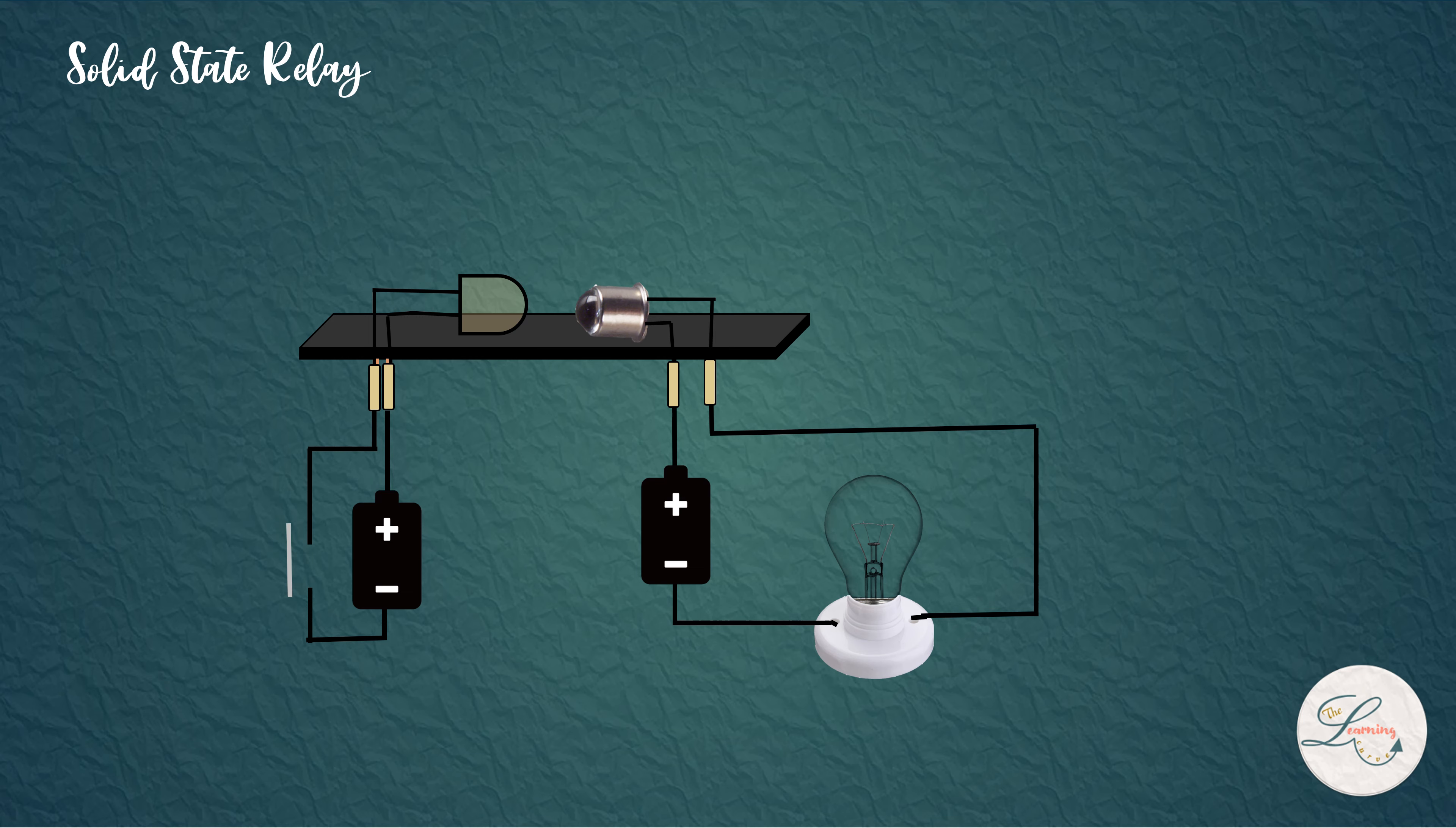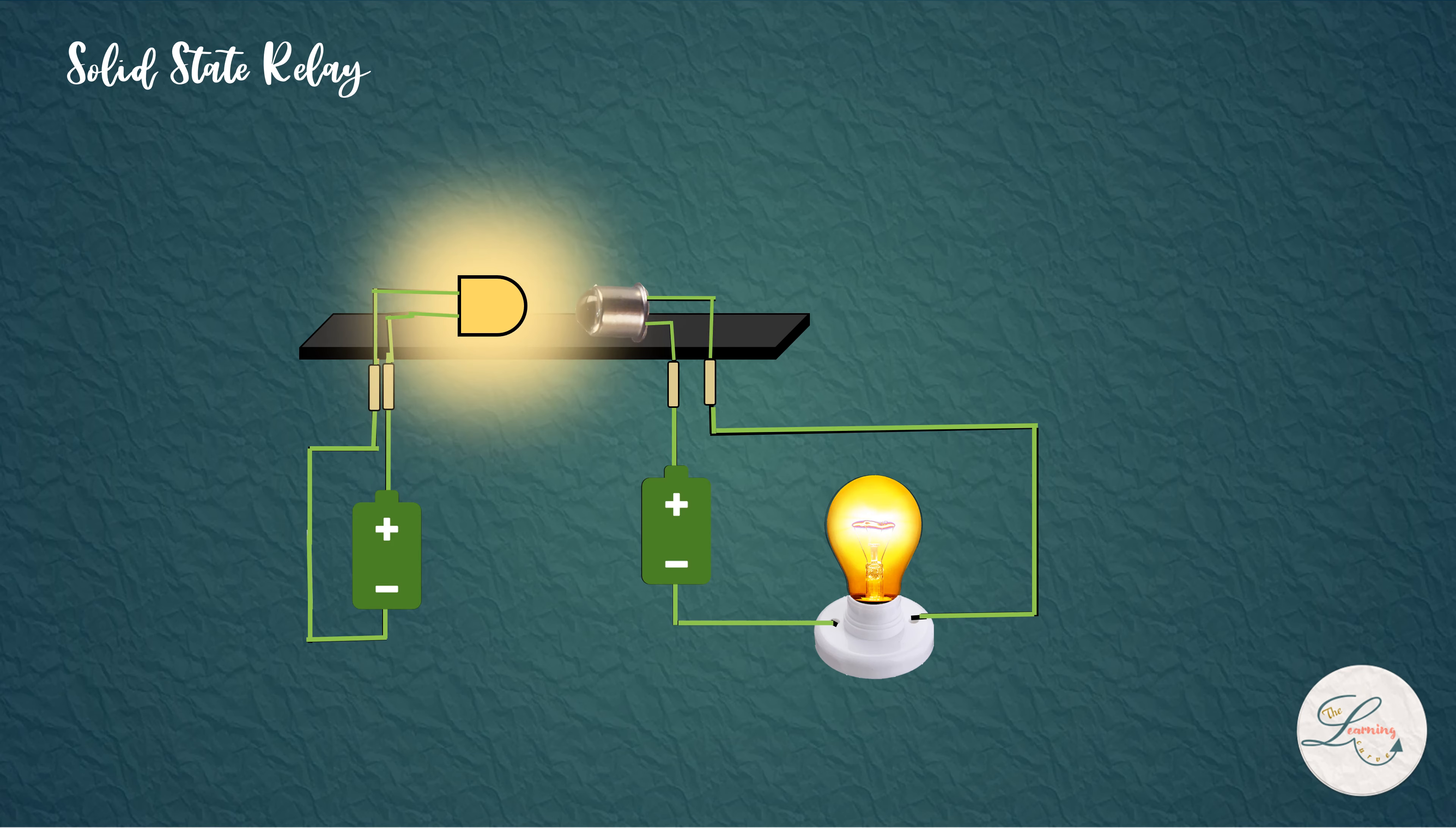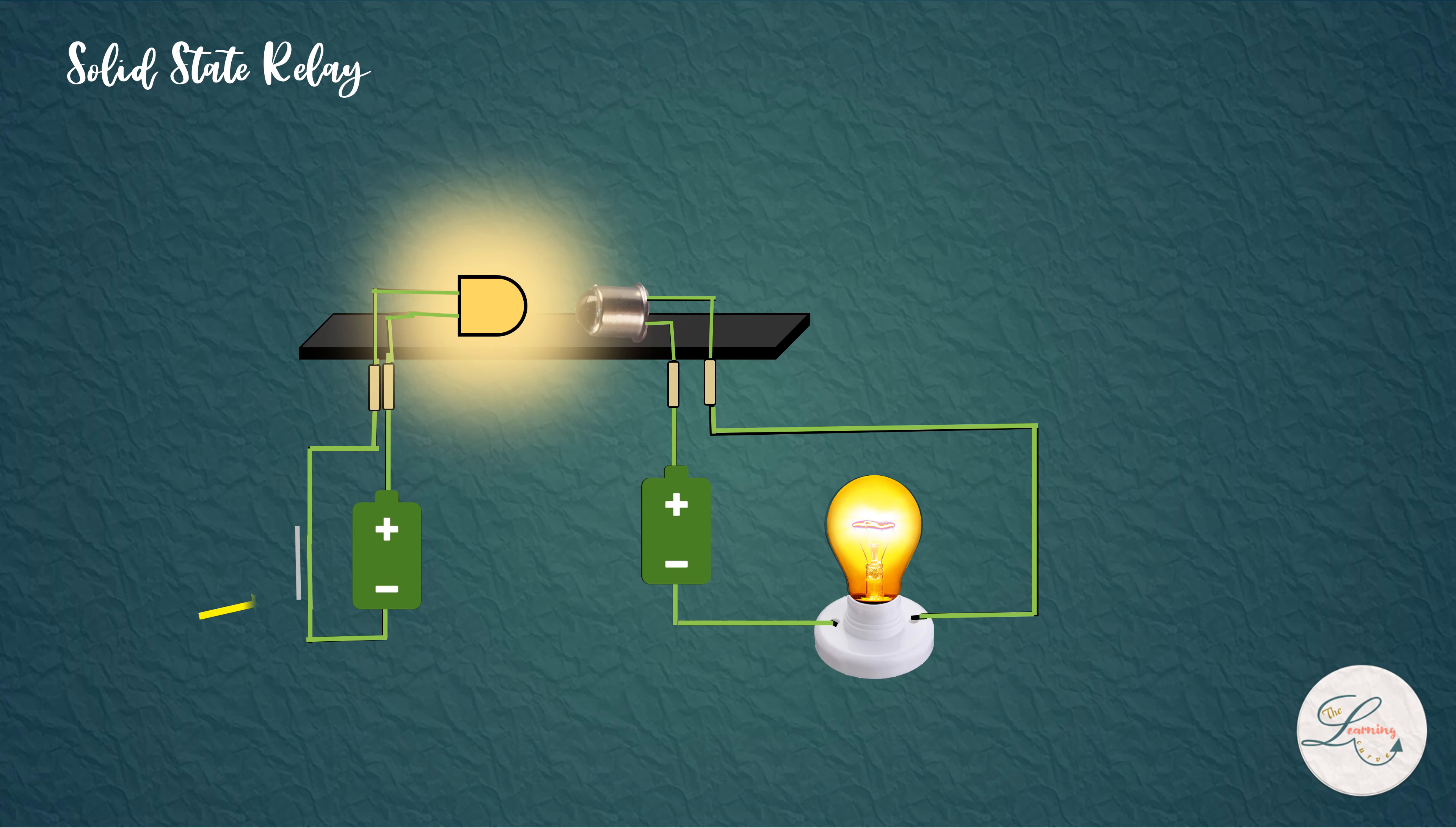When a relay receives a signal, LED is turned on. This light will energize the phototransistor and so it will allow the current to flow through it. Here, the circuit is turned on and off simply by switching on and off the LED.